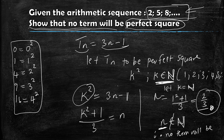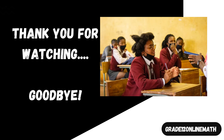Therefore, we can conclude that no term will be a perfect square. That's how you solve this using the strategic approach. I hope you understood — if not, just replay this video and internalize this knowledge. I just wanted you to learn that strategic approach and I hope you enjoyed it. Thank you very much for watching.